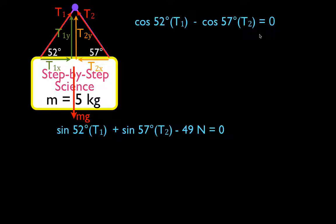These are the same two equations from the previous slide. We have two equations and two variables — T1 and T2 — in each equation. There are a couple of ways to solve this: you can add the equations, use substitution, or set them equal to each other. I think it's easiest in this case to solve one equation for one variable and substitute into the other. We're going to use the x-direction equation, solve it for T2, substitute that value into the y-direction equation, and solve for T1 first. So the first thing is to move cosine 57 to the other side.